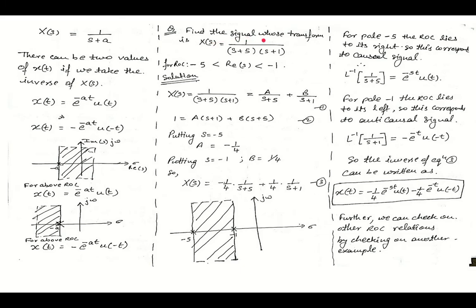To understand this we will solve a numerical: find the signal whose transform is X(s) = 1/((s+5)(s+1)), given that the ROC is -5 < Re(s) < -1, i.e., -5 < σ < -1. In questions where you have to consider the ROC, the ROC will be given to you, and you have to take the s-plane into consideration to solve it.